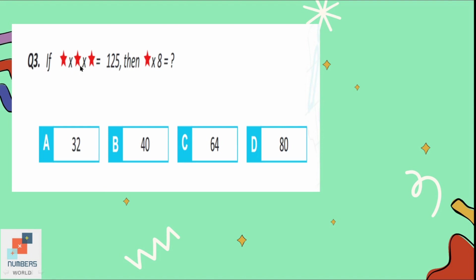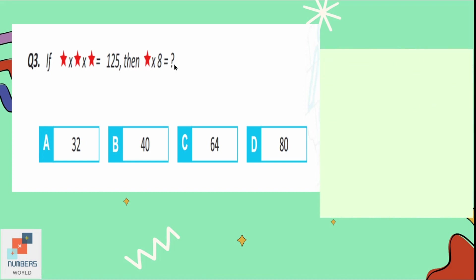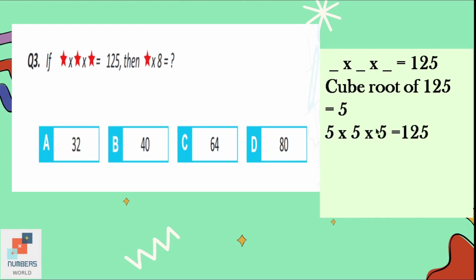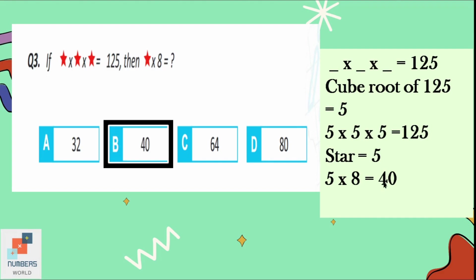Question number 3: if star × star × star = 125, then star × 8 equals what? We need a number that multiplied by itself three times gives 125. The cube root of 125 is 5. If we multiply 5 three times, we get 125. So the value of the star is 5. Then star × 8 = 5 × 8 = 40. Option B is the correct option.